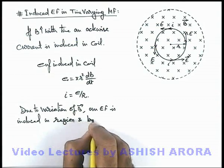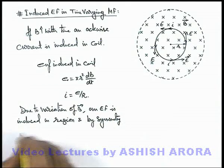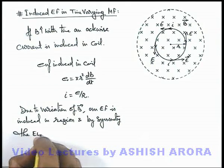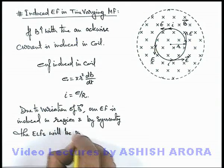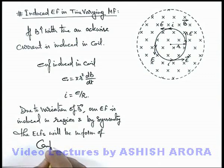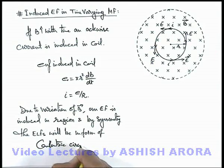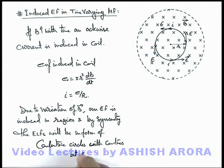By symmetry we can say the electric lines of force will be in the form of concentric circles with their center at the axis of the magnetic field.